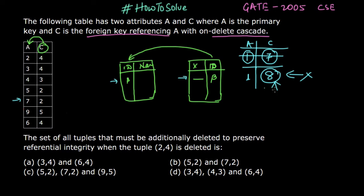Similarly, when I am deleting a record I have to be careful of these things. Let us start with the problem. It is saying the set of all tuples that must be additionally deleted to preserve referential integrity when the tuple (2, 4) is deleted.